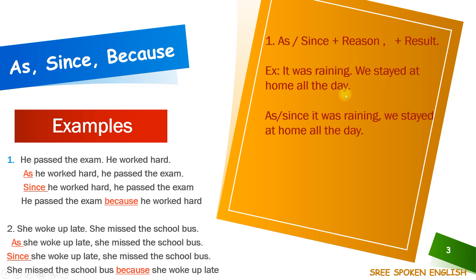So, how should we use as or since? In this way we can write: as it was raining, we stayed at home all the day. In the same way, we can use since: since it was raining, we stayed at home all the day. Please remember, we need to keep a comma after the reason.